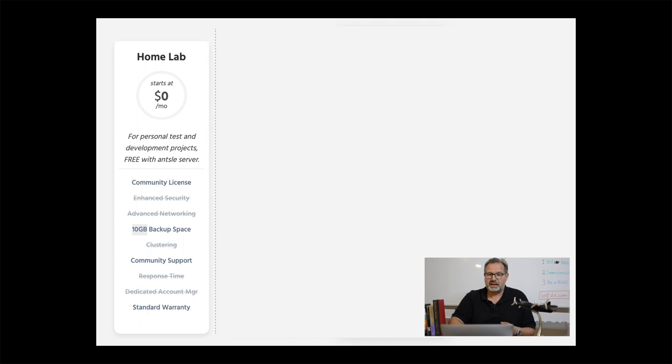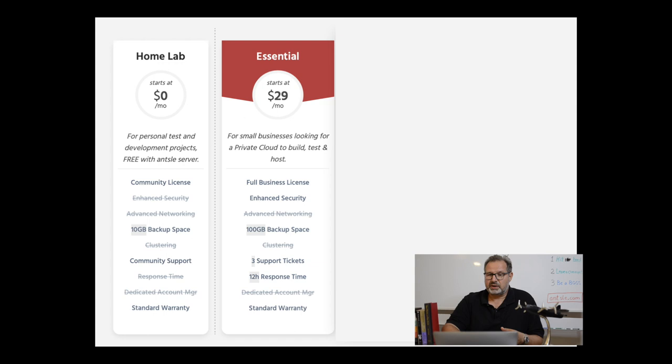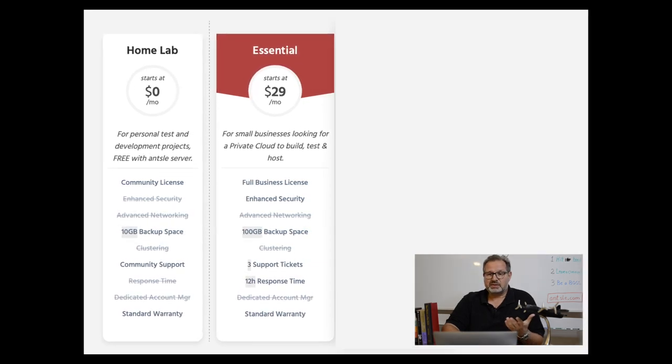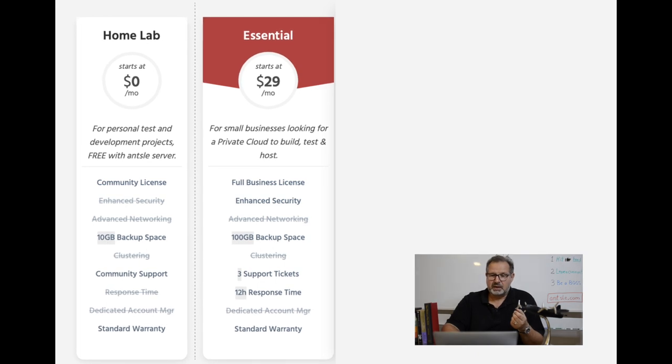Let's look at how the Ansel Private Cloud actually works. Here are the plans we have. You see the Home Lab plan — that is free. If you use the Ansel Private Cloud for personal use, not for business, it's all free. You even get 10 gigs of backup space for free and community support. For business use, we have the Essential plan starting at $29 a month. You get the full business license with all functionality unlimited, enhanced security features, 100 gigs of backup space, three support tickets a year, 12-hour response time, and the standard warranty.